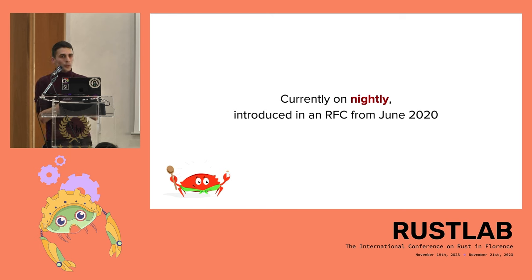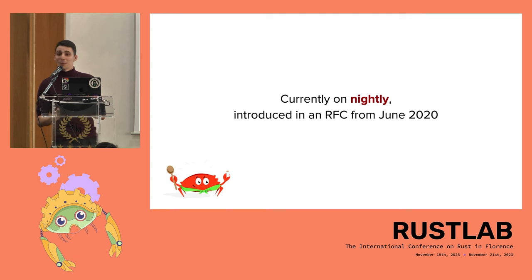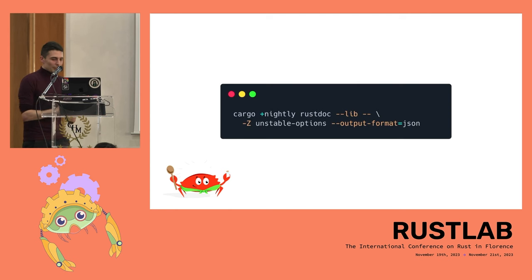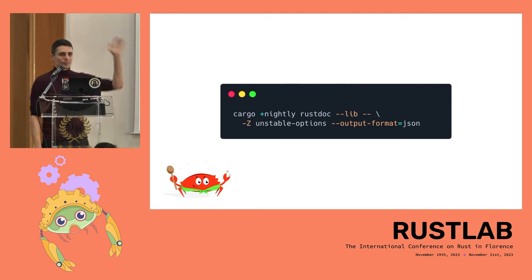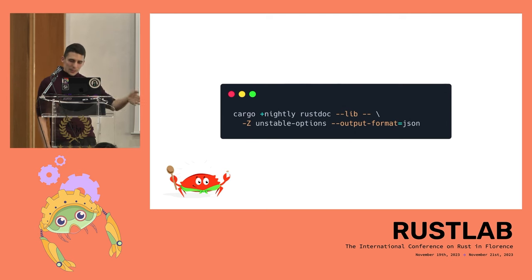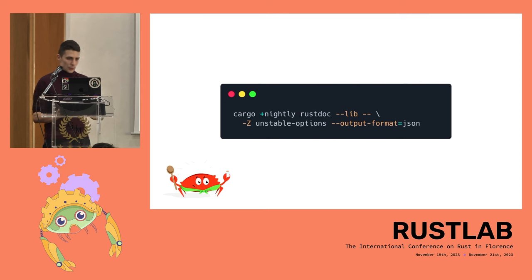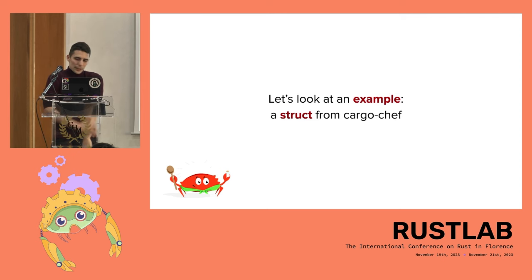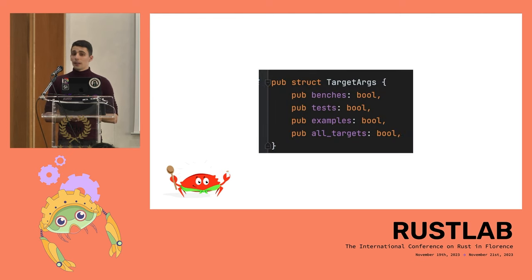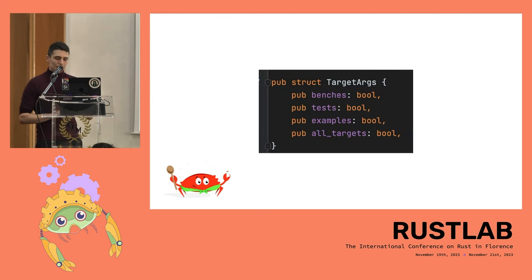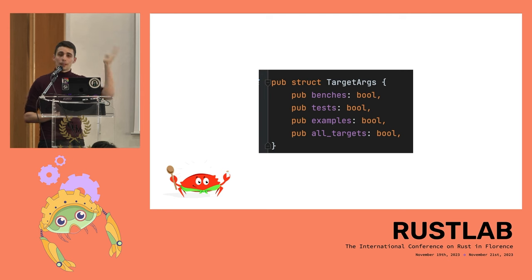You can try this yourself: run `cargo +nightly rustdoc --lib -- -Z unstable-options --output-format json`. Let's look at an example — a public struct `TargetArgs` from a crate I wrote called `cargo-chef`, with four boolean fields: benches, tests, examples, and targets. In the JSON output, every item gets a unique ID; `crate_id` zero means it belongs to the crate you generated docs for. You get the struct name, visibility (public), and then an enum tag for the inner kind, telling us it's a struct with fields, generics, and links to all implementations — both inherent implementation blocks and trait implementations.